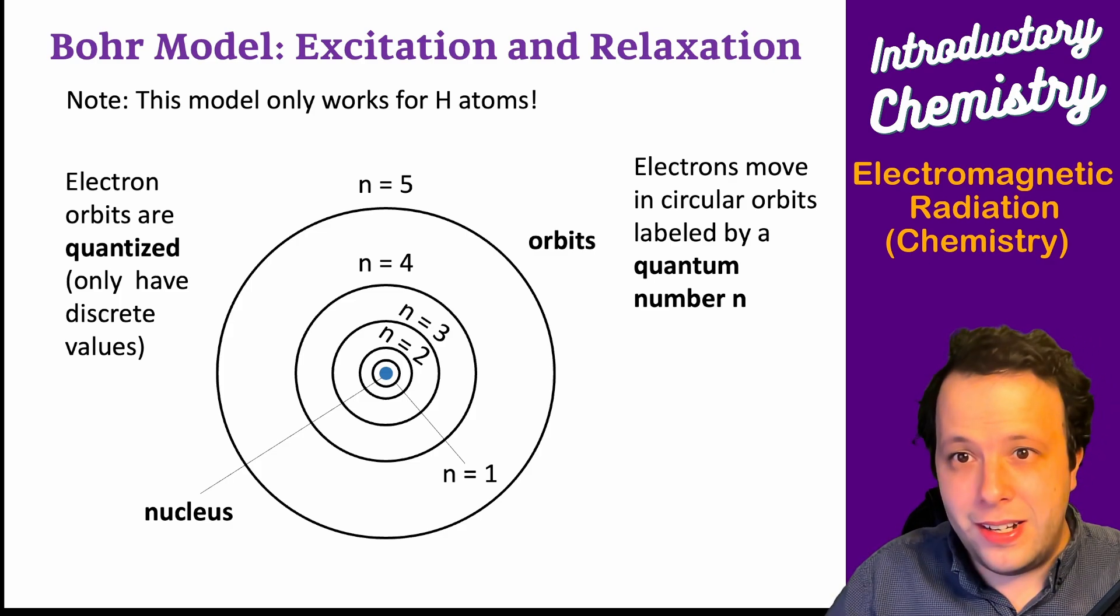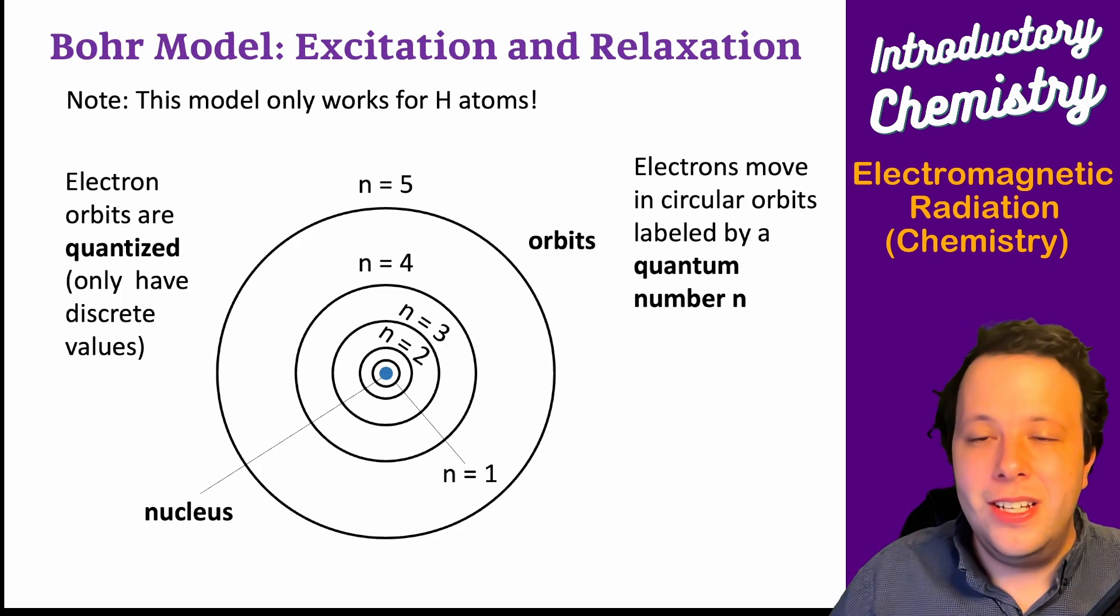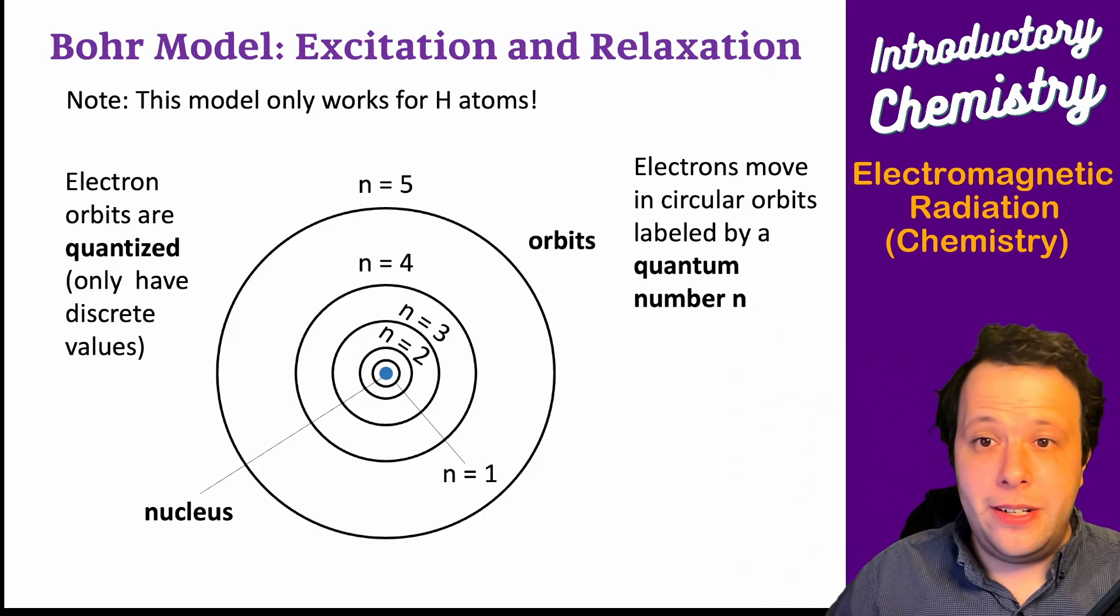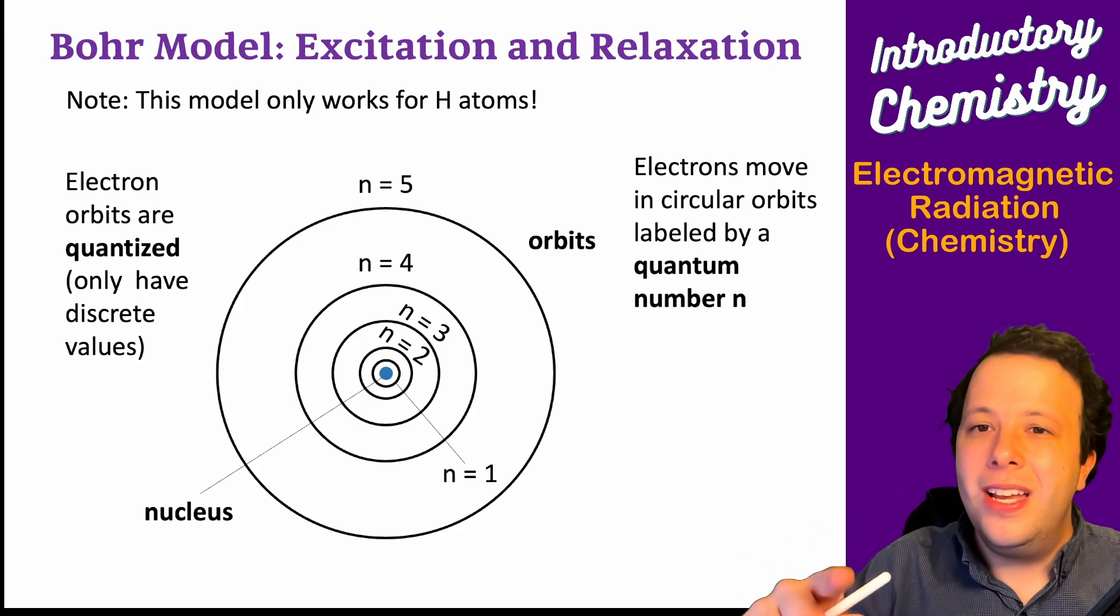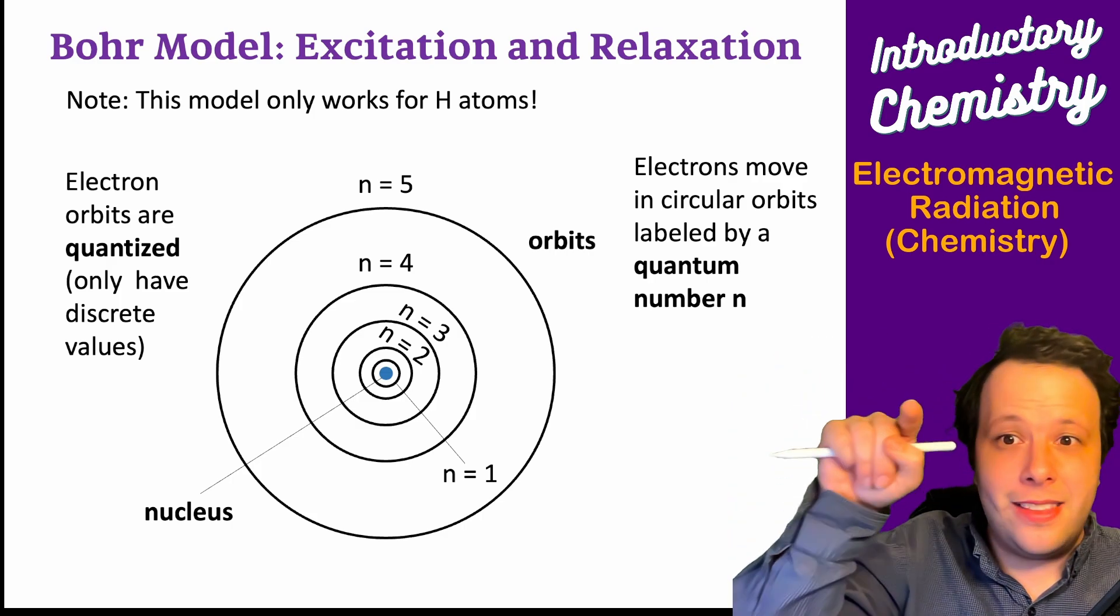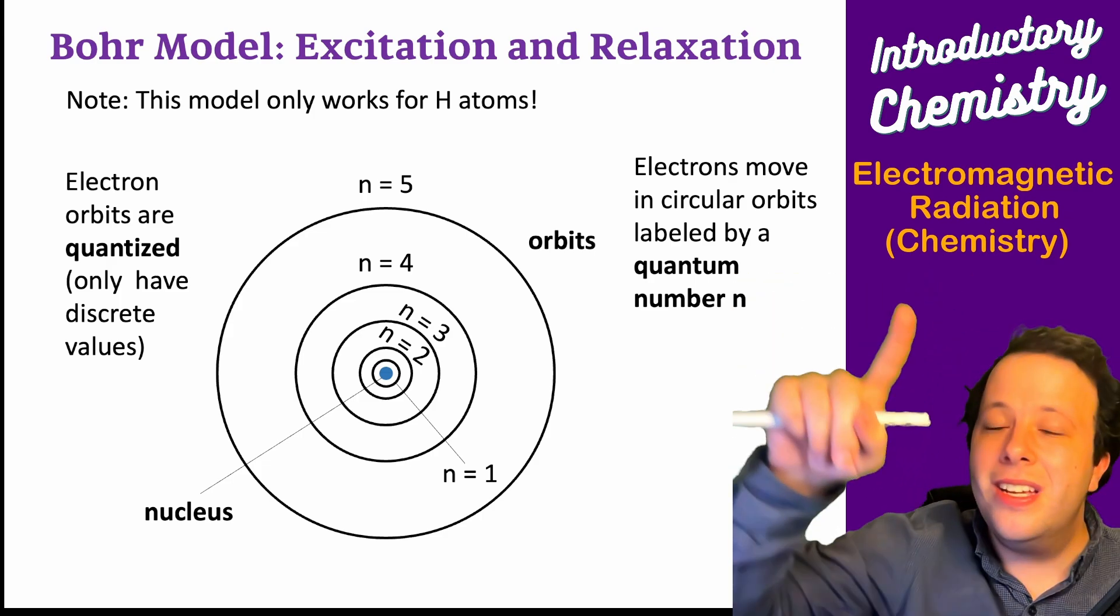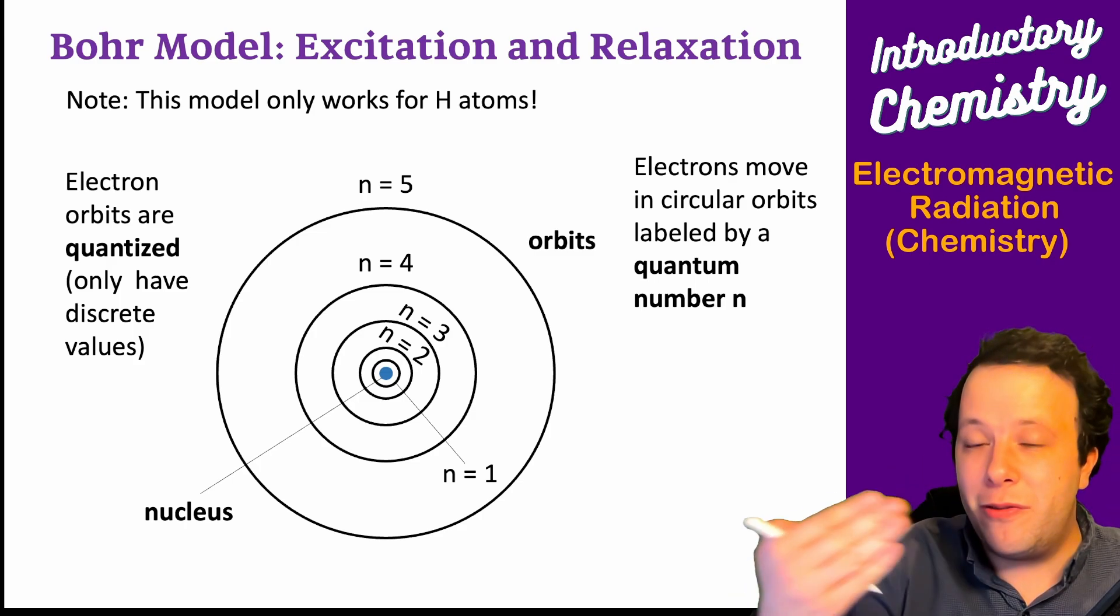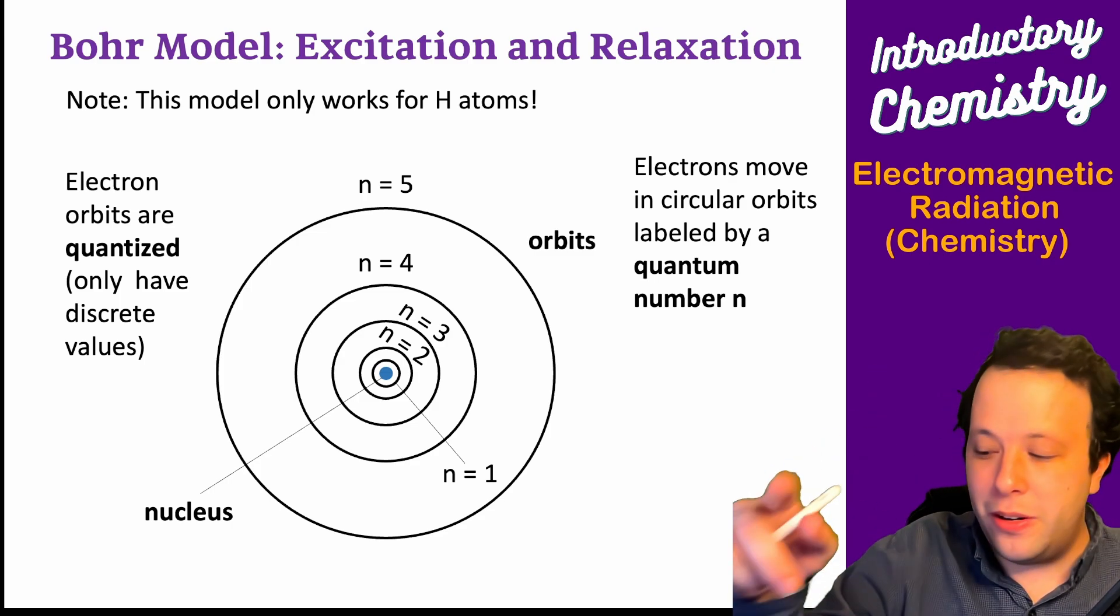Electron orbits are quantized, meaning they have a very specific amount of energy to access each orbital. Think of an elevator taking you to different floors of a building. You hit the second floor, it takes so much energy to get pulled up. The third floor takes more energy, and you can travel between floors, each requiring a certain amount of energy.